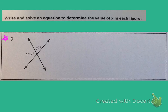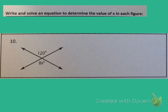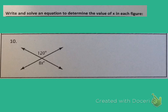This one I want you to try completely by yourself, and we will check it with our groups when we return to class. Once you've solved that one on your own, move on to number 10. Write and solve an equation to determine the value of x. Looking at this figure, these angles are across from each other on intersecting lines, so they are vertical angles. Vertical angles are congruent, meaning they have the same measure. So 8 times x equals 120 degrees. Finish solving this on your own and check with your group when we return to class.